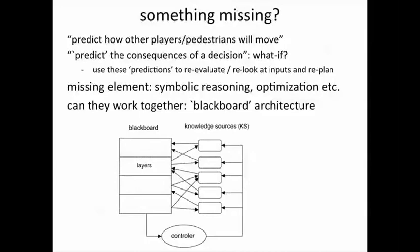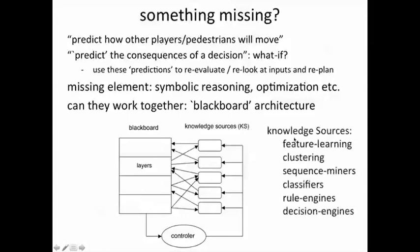The blackboard architecture consists of a blackboard where knowledge — or what one learns about the world — is posted. This knowledge is posted by knowledge sources. Knowledge sources can be of many types: they could be bottom-up feature learning, clustering, sequence miners like HTM, or classifiers — things which learn from the data directly. Or they could be symbolic rule engines or decision engines which do planning or reasoning.